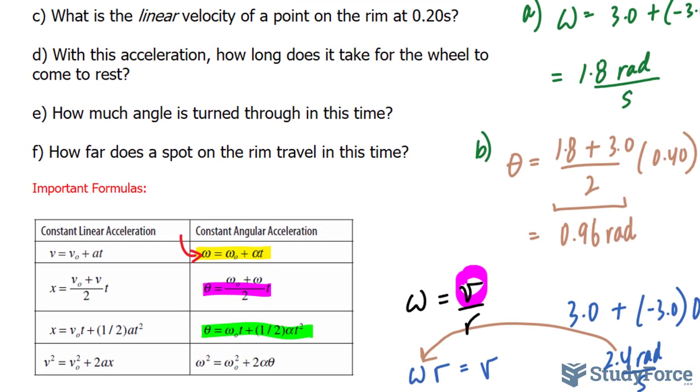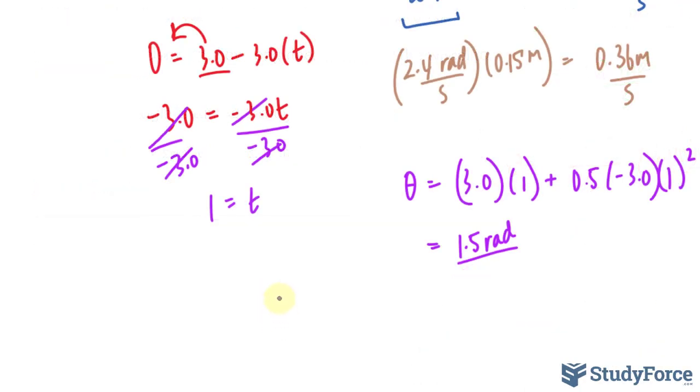And lastly, how far does a spot on the rim travel in this time? For this, we have to use the relationship that relates the radius, the angle, and the displacement. I'll represent displacement as S, and it's calculated by taking the radius times what we found for the angle.